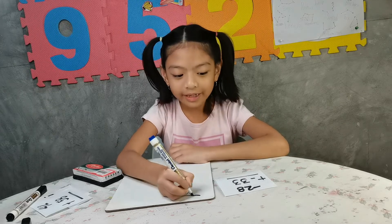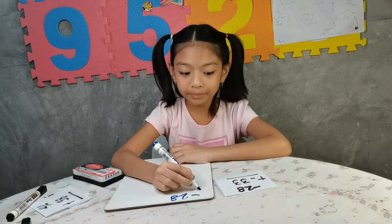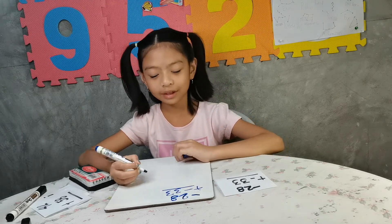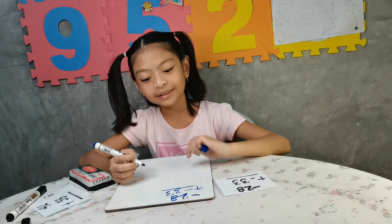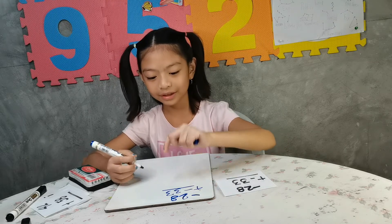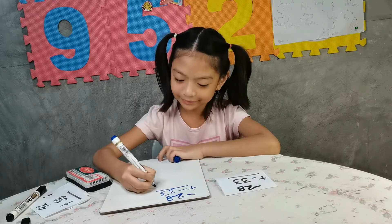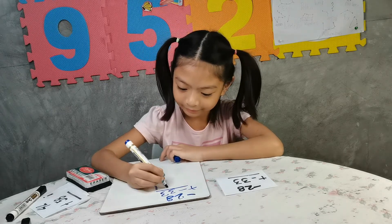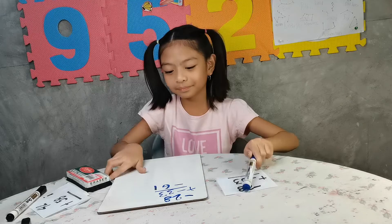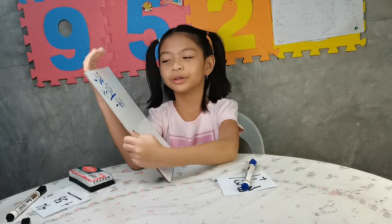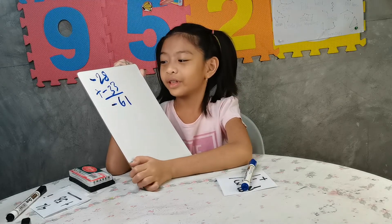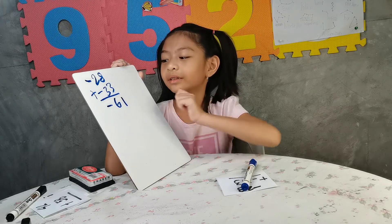Next: negative 28 plus negative 33. The signs match, so we add: 28 plus 33. Don't forget the negative sign. The answer of negative 28 plus negative 33 equals negative 61.